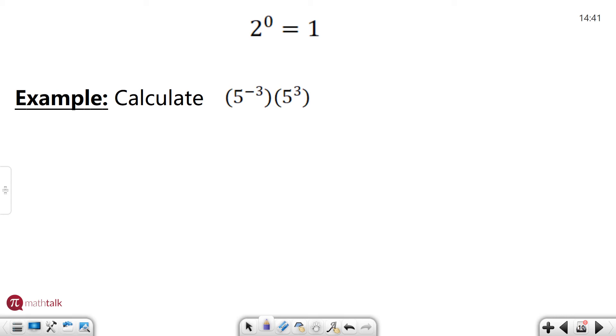We have 5 to the negative 3 times 5 to the positive 3. Another previous rule we looked at, all we have to do for this is add the exponents together. And any negative number plus the positive value of that number is 0. So negative 3 plus 3 is 0 and any number to the 0 is 1.